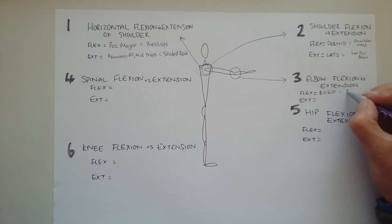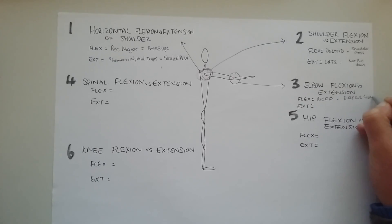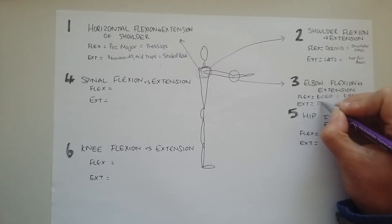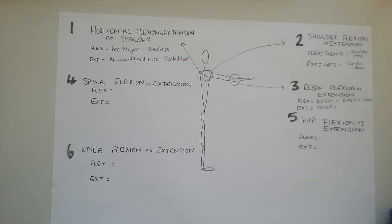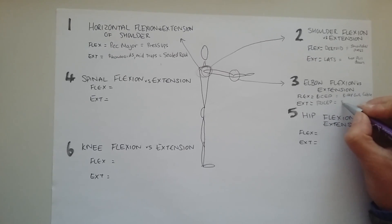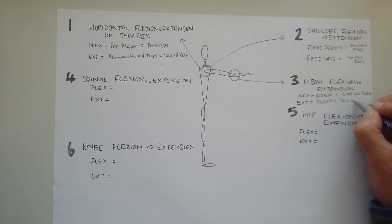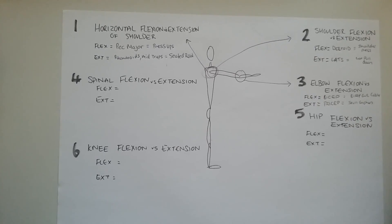Now, a good exercise for that, I'm going to choose bicep curl using a cable. And then I'm going to use the extension exercise. We know is obviously the muscle associated as a tricep. Bicep and triceps go together. Then the exercise I'm going to use for this, I'm going to use skull crushers for that one. There you go. Nice and easy.